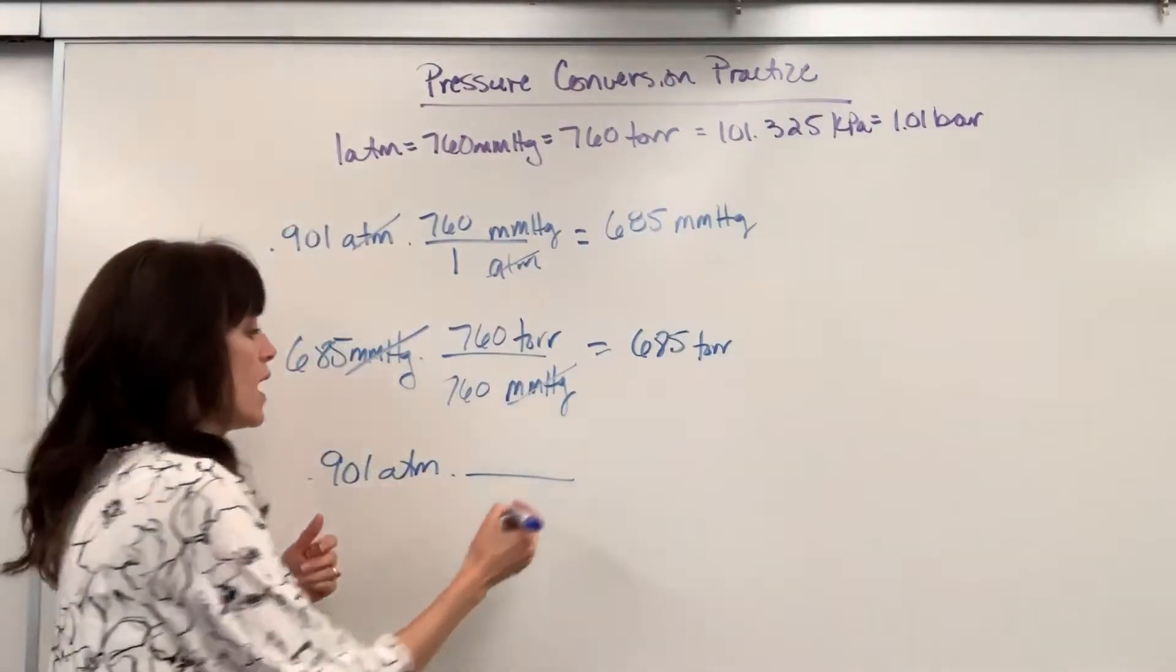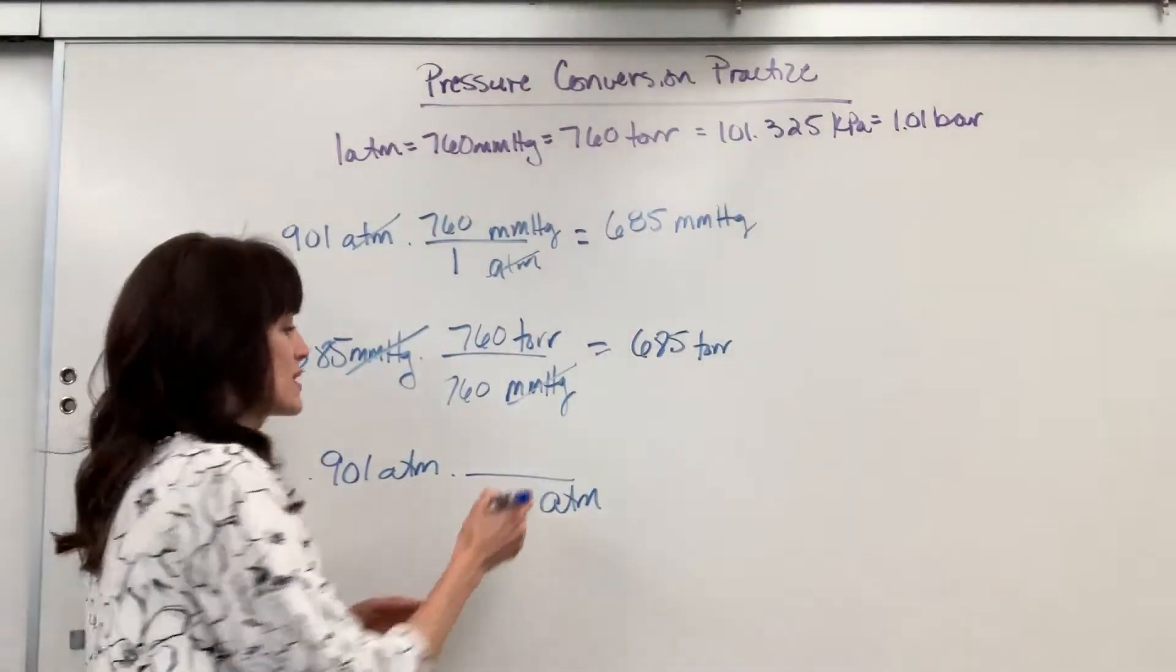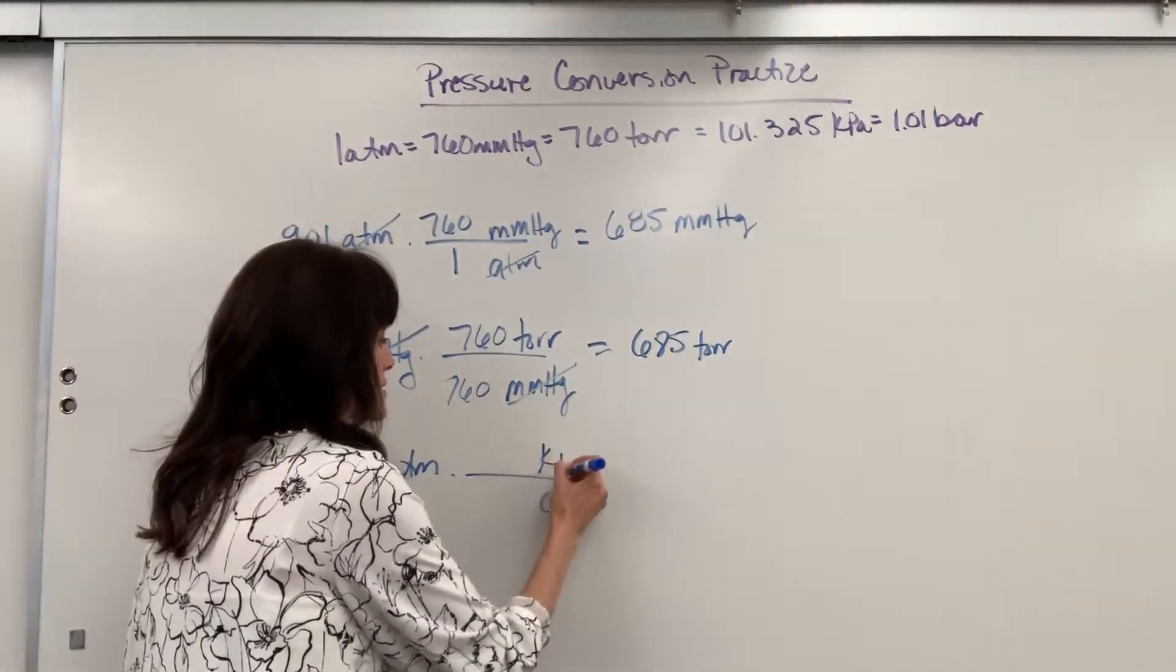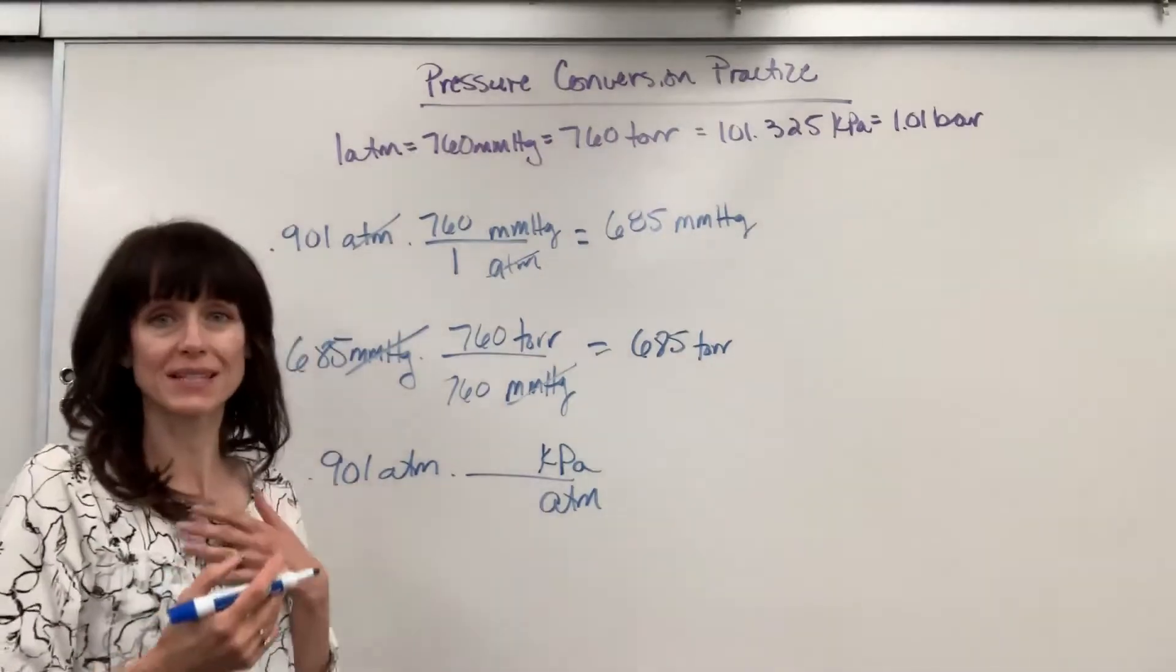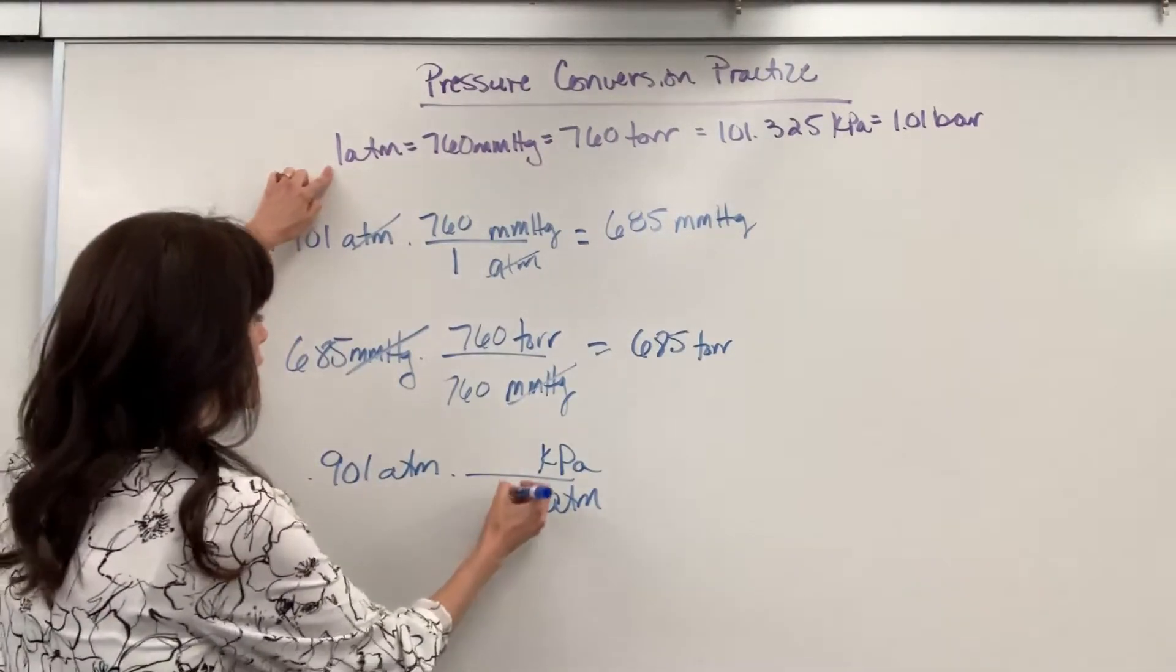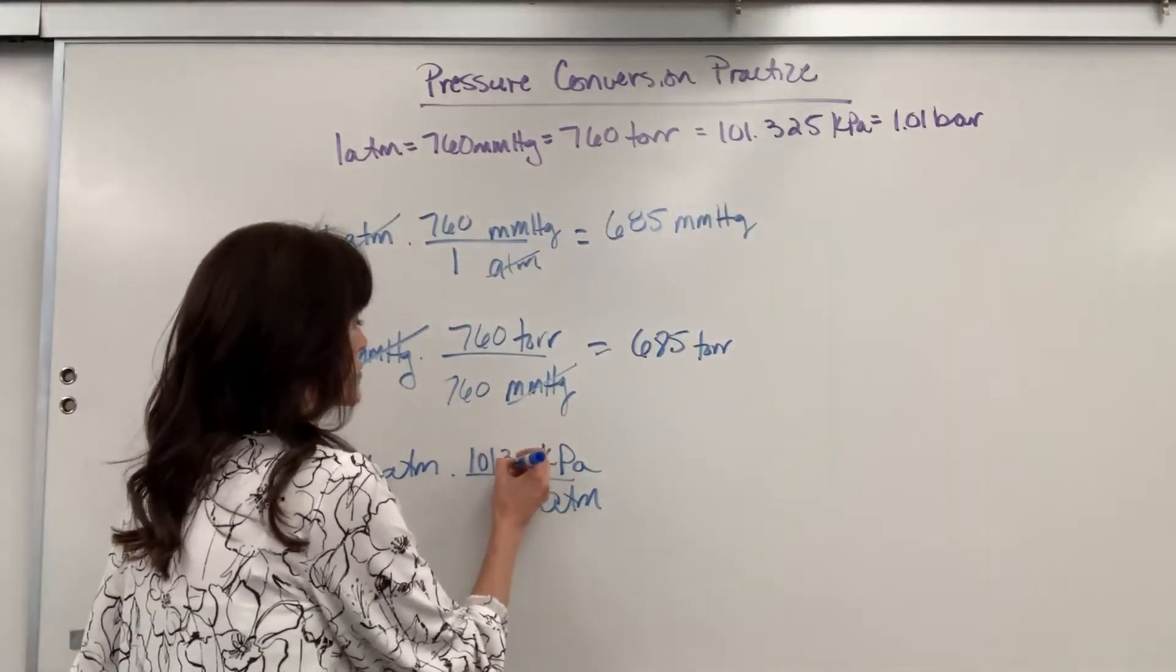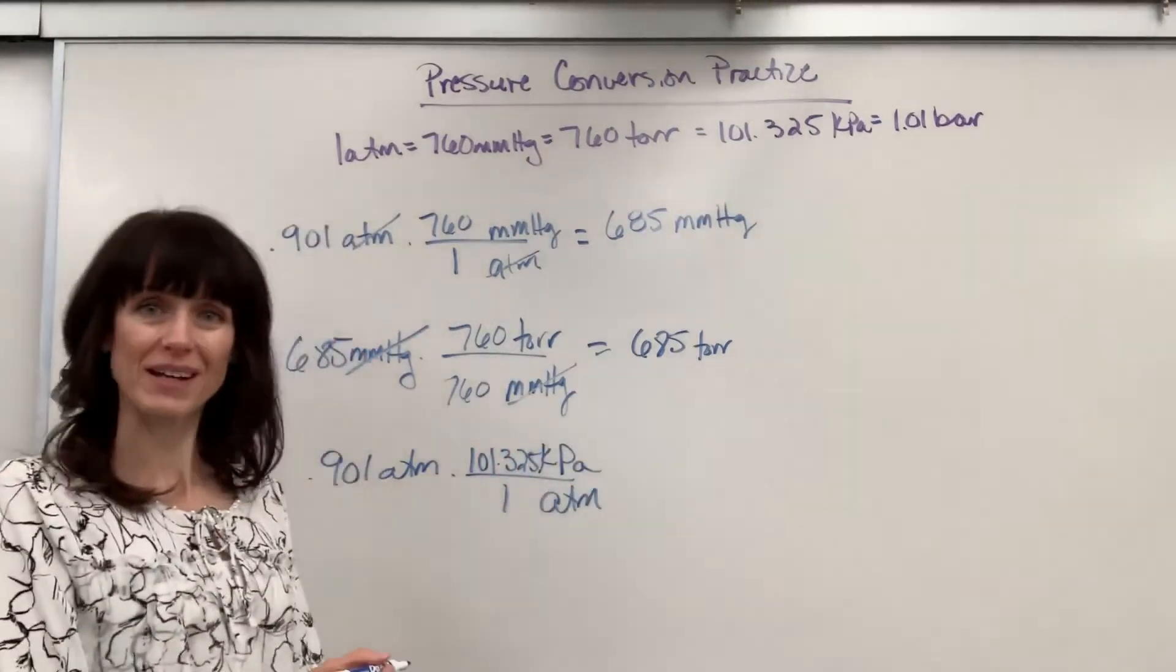I always do units first. I'm going to put ATM in the denominator so it cancels, and I'm going to put the kilopascals in the numerator because that's what I want to end with. Now I attach the numbers, 1 ATM is equal to 101.325 kilopascals.